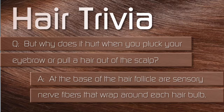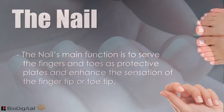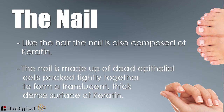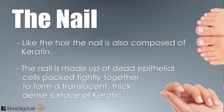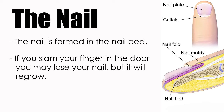The third major part of the integumentary system is the nail. The nail's main function is to serve the fingers and toes as protective plates and enhance the sensation of the fingertip or toe tip. Like the hair, the nail is also composed of keratin — primarily made up of dead epithelial cells packed tightly together to form a translucent, thick, dense surface of keratin. The nail is formed in the nail bed. If you slam your finger in the door, you may lose a nail, but it will regrow. If you damage the nail bed, however, that nail will never come back.